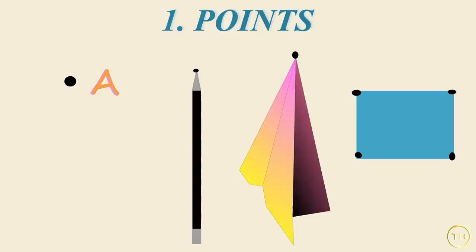A point is shown by a tiny dot. A point can be given a name. Capital letters of the alphabet are used to name a point. The points S, F and N are shown in the figure.